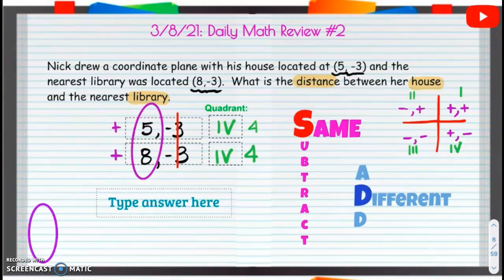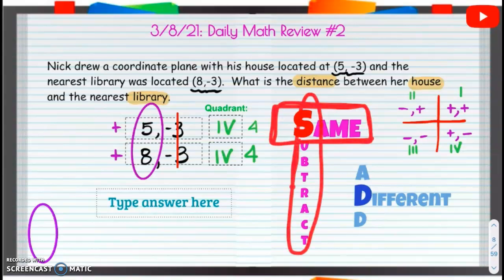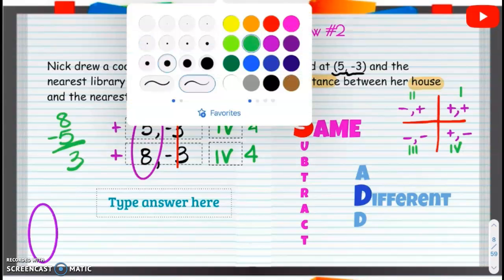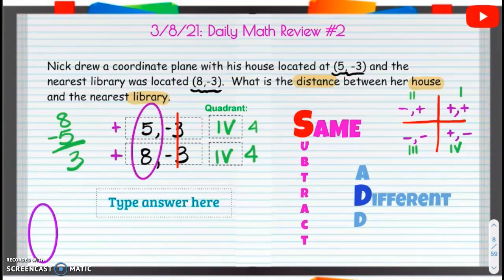The 5 is positive, 8 is also positive. If we have both positives, they're the same sign. So, that means we're going to do the same sign, and we're going to subtract. So, we're going to do 8 minus 5, and we'll get 3. So, our answer is going to be 3 units.